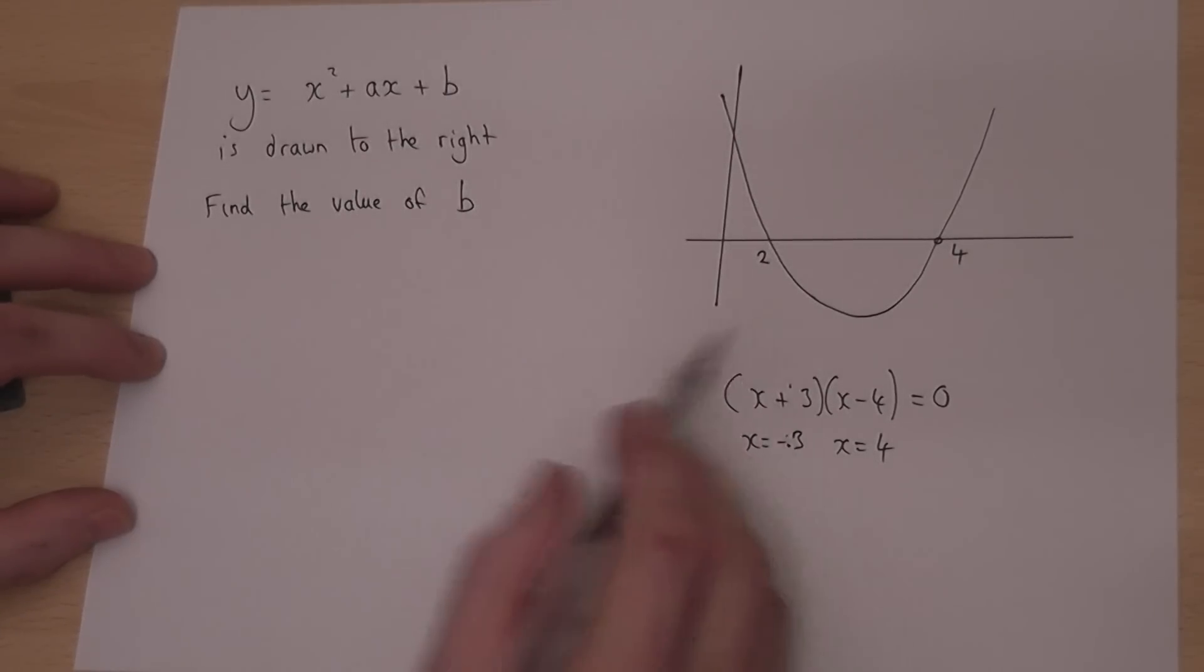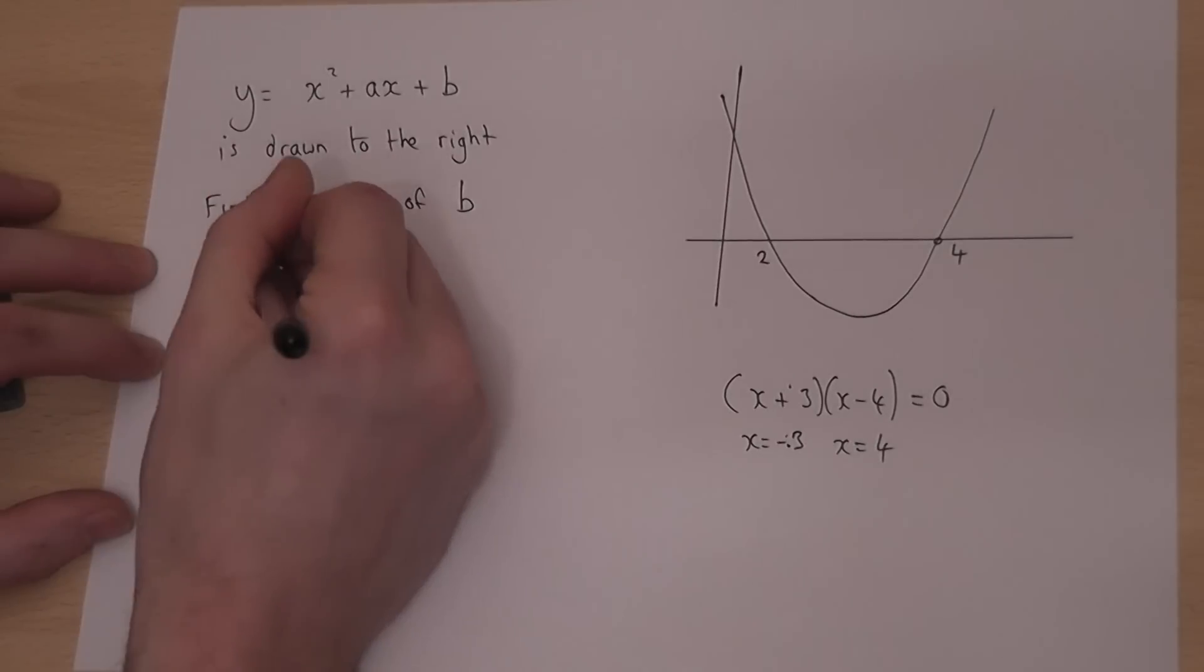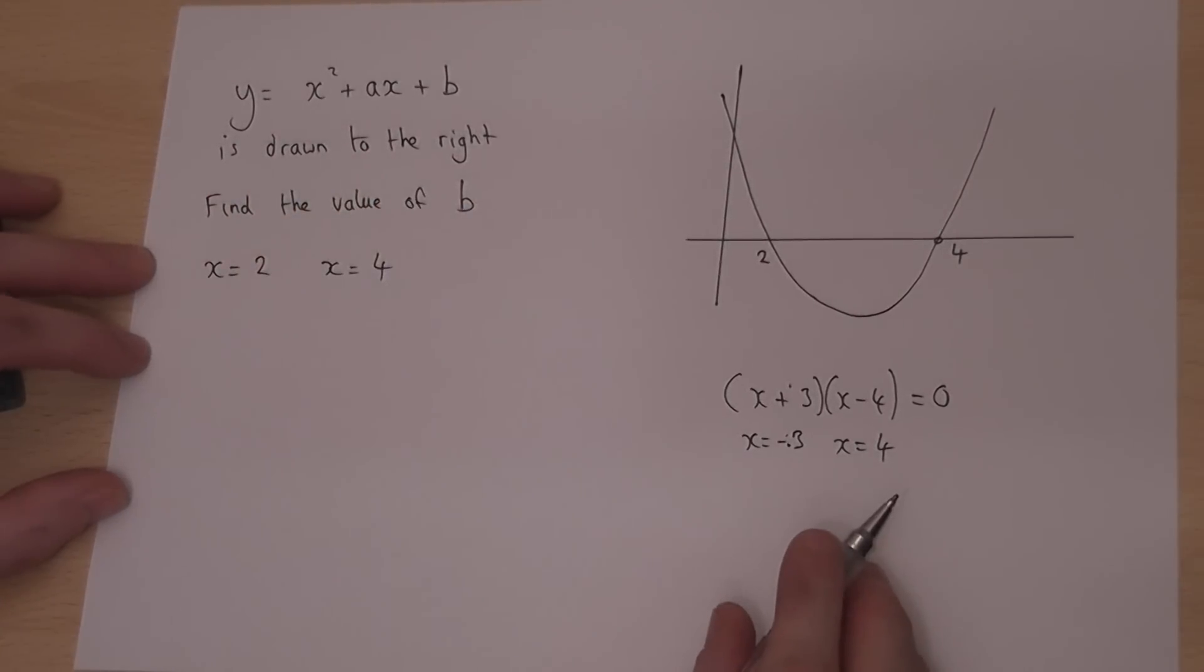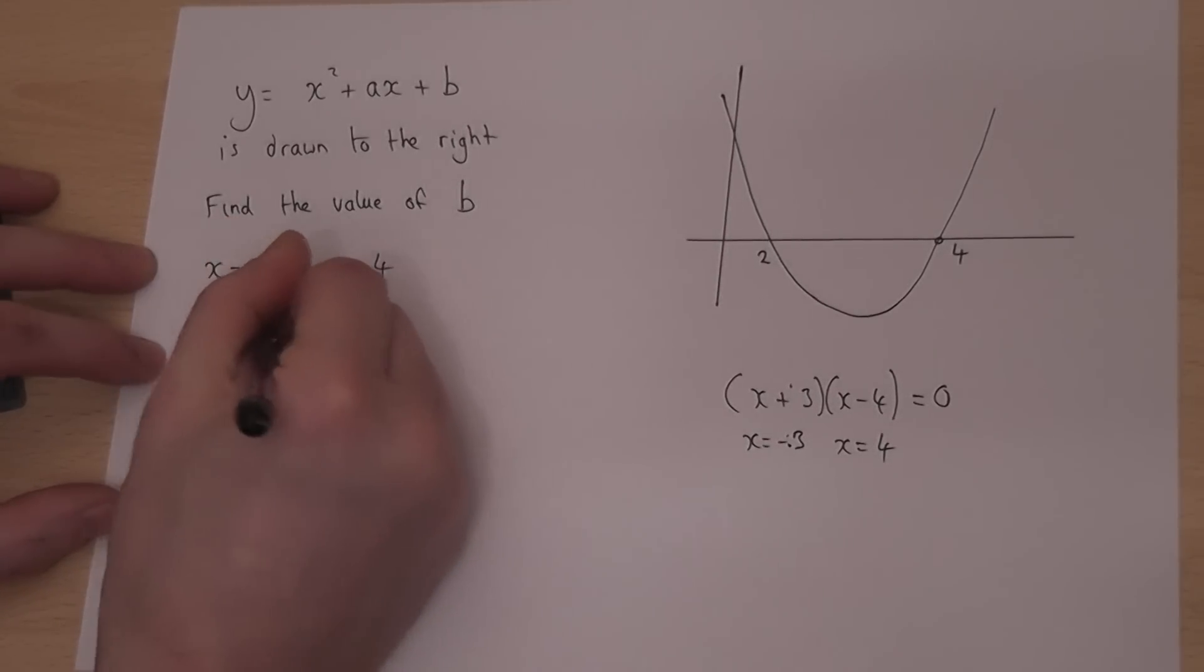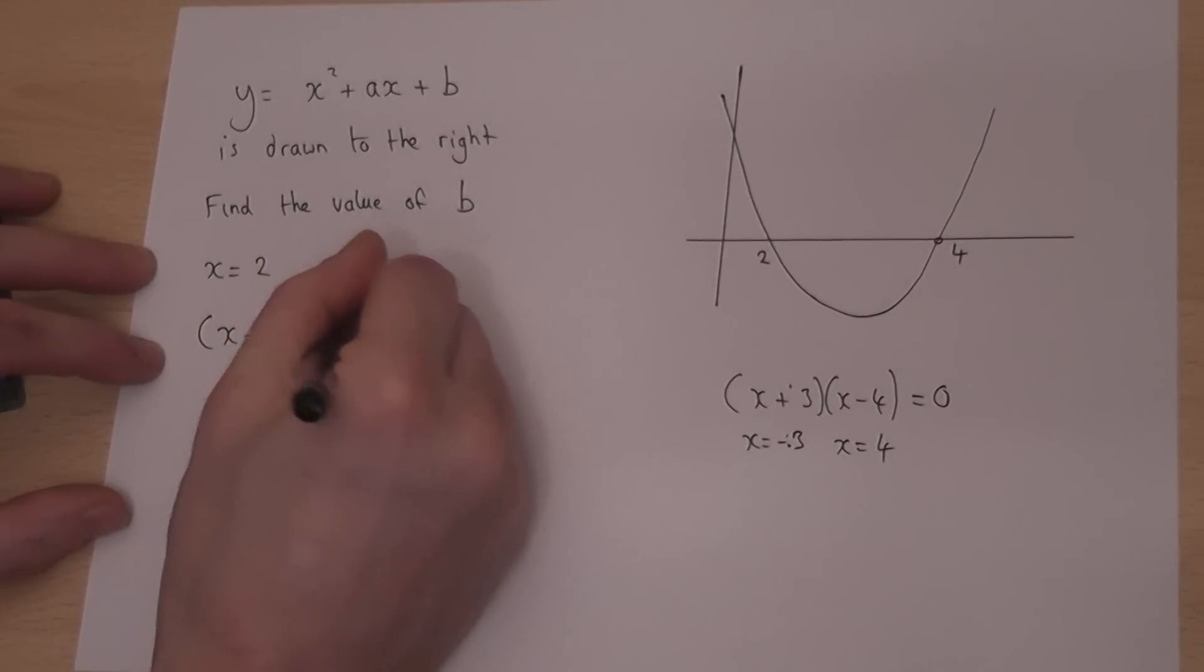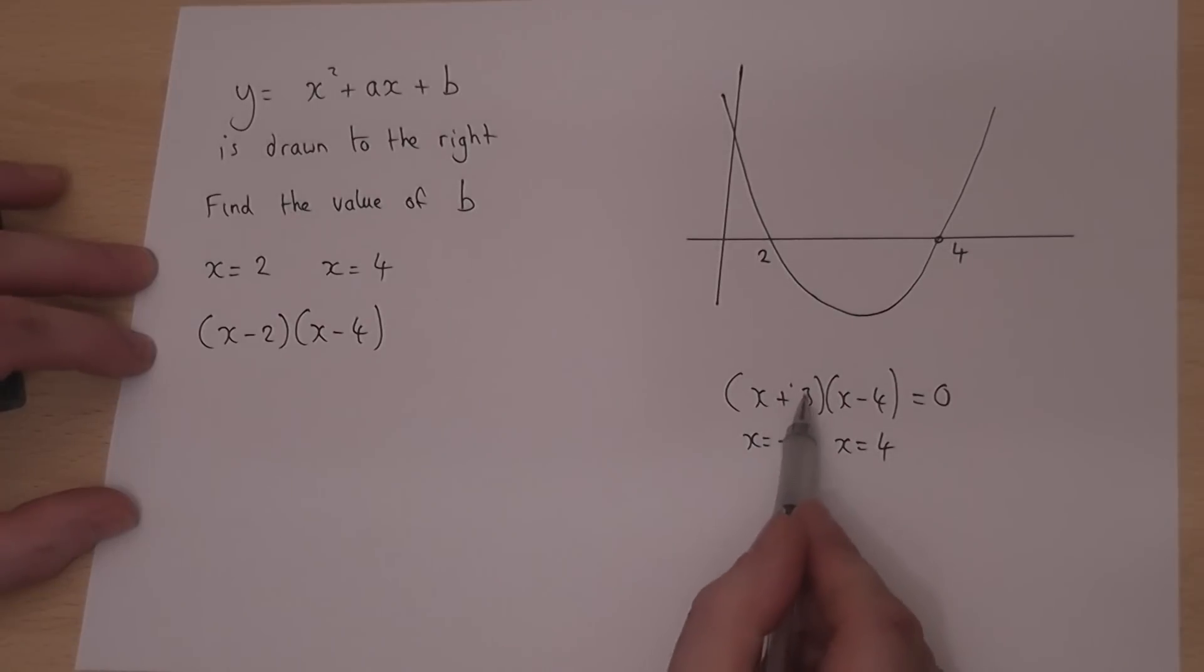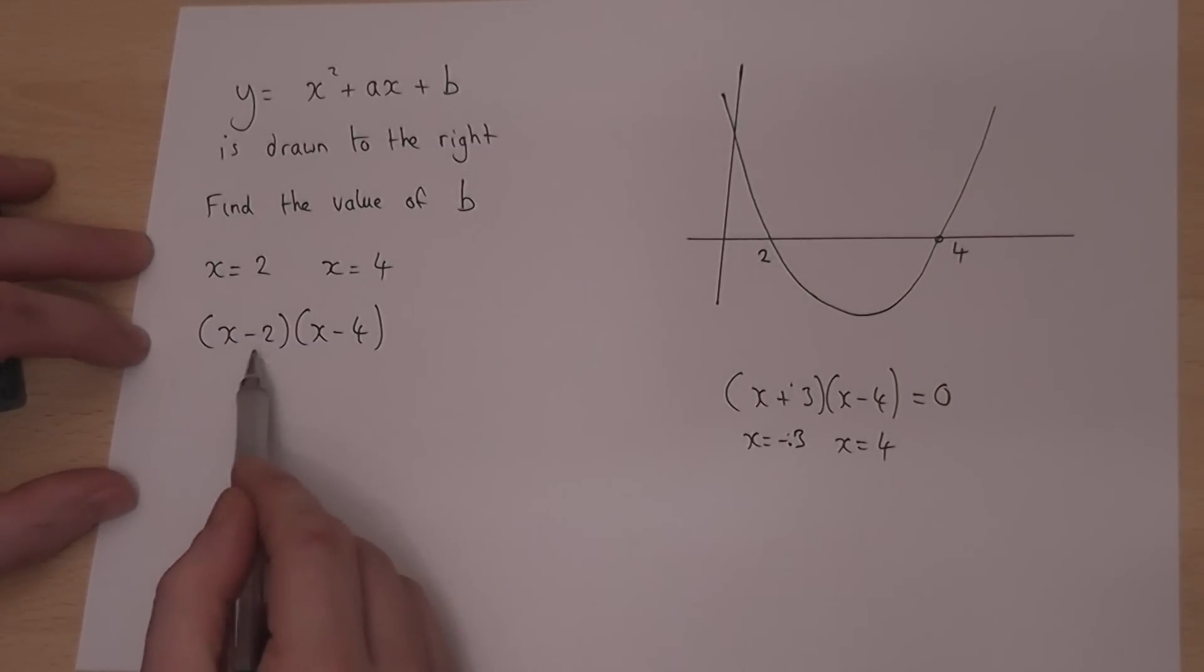So in this question we know the solutions are x equals 2 and x equals 4. So I therefore know the factors, it must be x minus 2 and x minus 4, because as we said before, the factors and what are called roots have a different sign. So this graph is of the form x minus 2 and x minus 4.